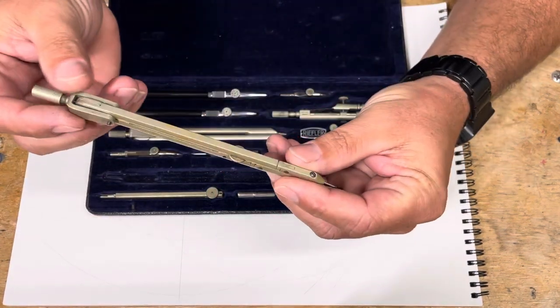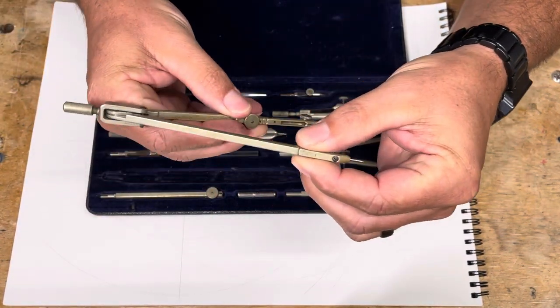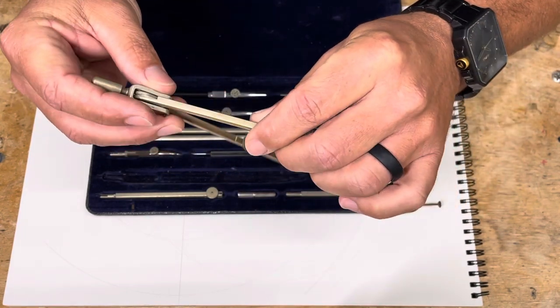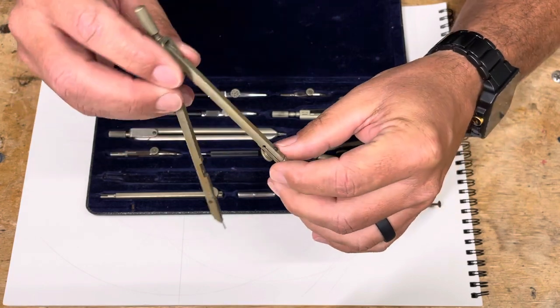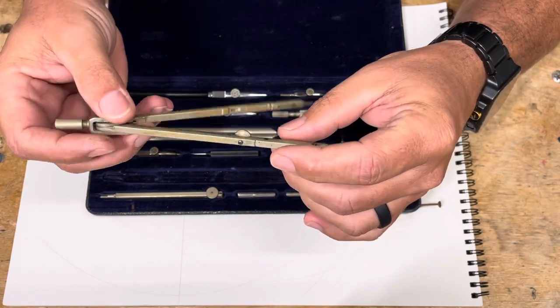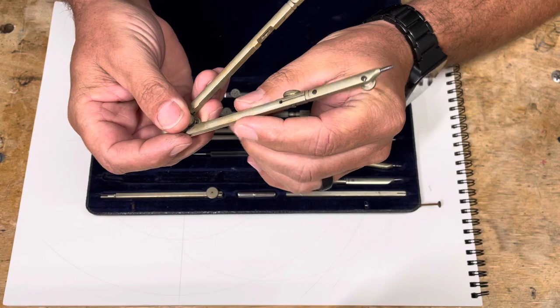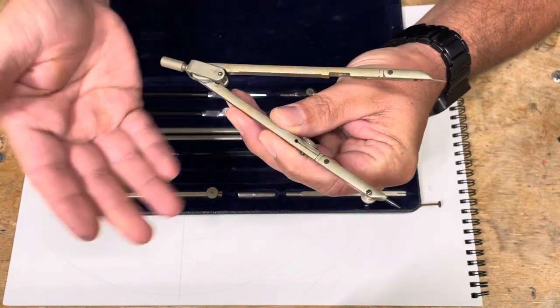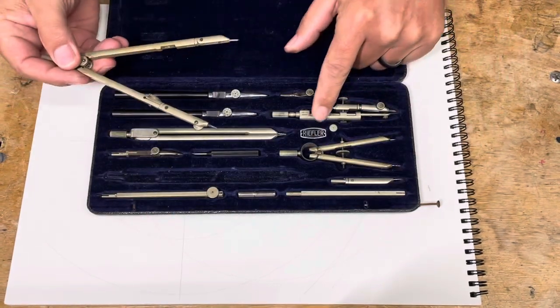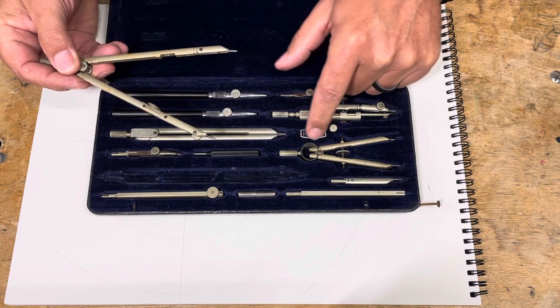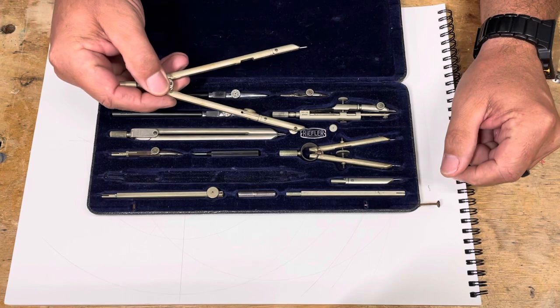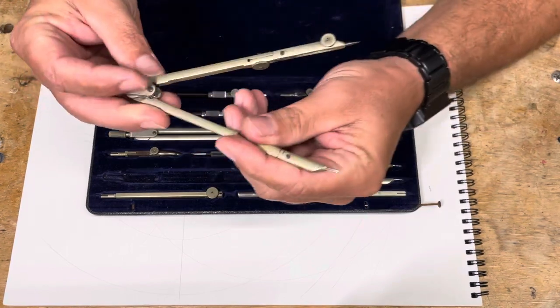So first of all this has this nice profile which is on a lot of the Rifler kind of G series. You got the flat here and then you have the rounded on top and bottom. Kind of reminds me of their logo, the profile is kind of like the logo here.